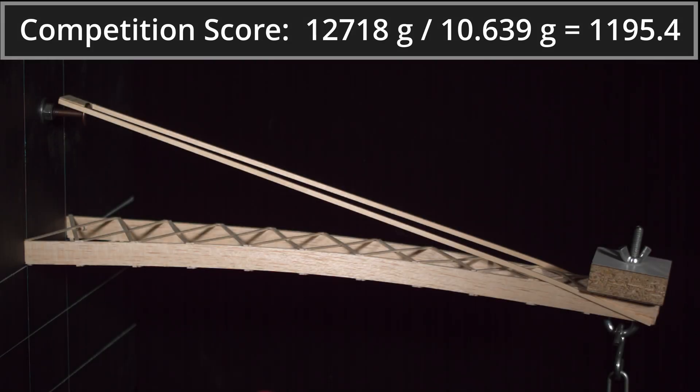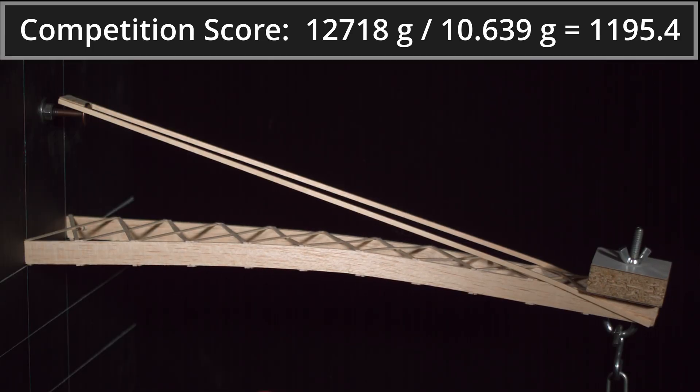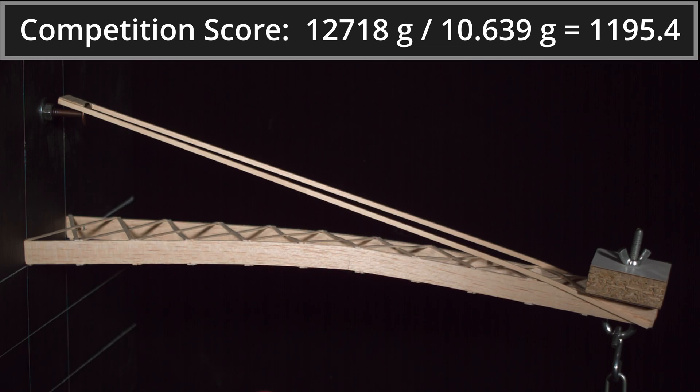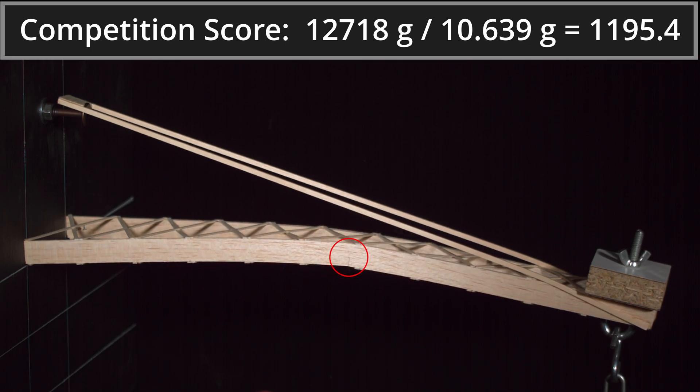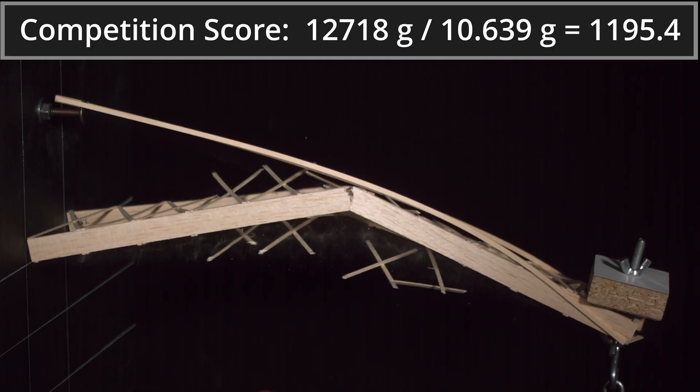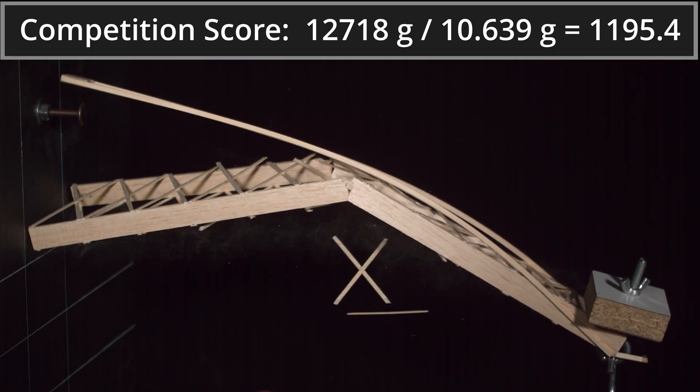This one held 12.718 kilograms for a score of 1195.4. It didn't even hold more than build number 2, which means that maybe the 1/8 beams are not a better choice than the 3/32 ones. Here we can clearly see the front beam failing first. Again, massive bending is happening right before failure. As this test continues, it's not playing a tune for us or anything fun like that. Just a straightforward compression beam snapping in half.